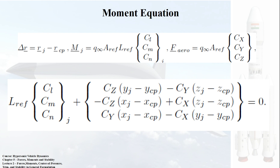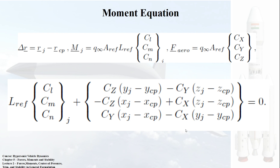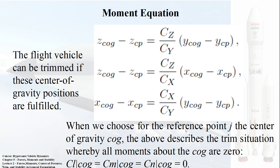The delta_r is the distance between J and CP, and the moment is given with respect to force times the perpendicular length. The moment about point J is given correspondingly with respect to Cl, Cm, and Cn — that is coefficients of roll, pitch, and yaw. The forces corresponding to the force coefficients are given in matrix form, including every force and every moment component.